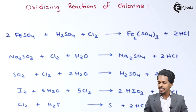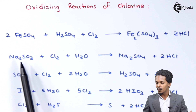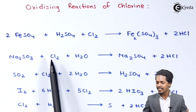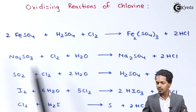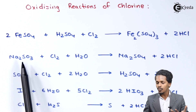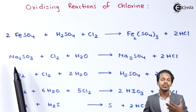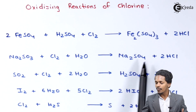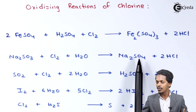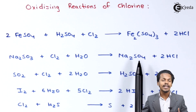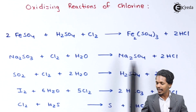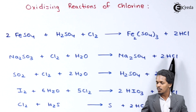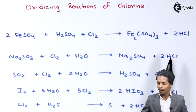The next reaction: whenever Na₂SO₃, known as sodium sulfite, is treated with Cl₂ in the presence of H₂O, the product we get is Na₂SO₄, known as sodium sulfate, along with 2 moles of HCl.